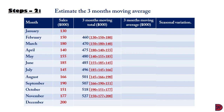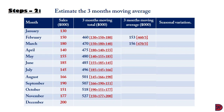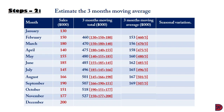We now move to find the 3-month moving average by dividing each 3-month total by 3. Starting: $460,000 ÷ 3 = $153,000; $470,000 ÷ 3 = $156,000; $475,000 ÷ 3 = $158,000; $480,000 ÷ 3 = $160,000; $485,000 ÷ 3 = $162,000; $496,000 ÷ 3 = $165,000; $501,000 ÷ 3 = $167,000; $507,000 ÷ 3 = $169,000; $518,000 ÷ 3 = $173,000; and $527,000 ÷ 3 = $176,000.